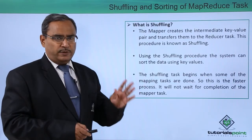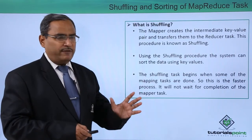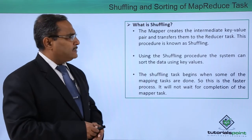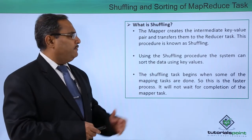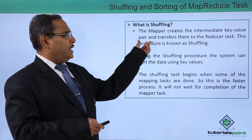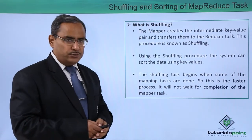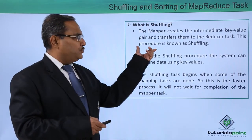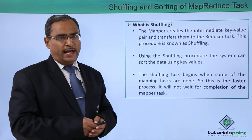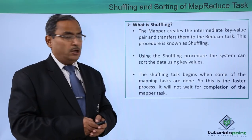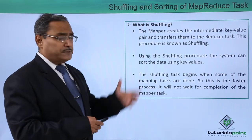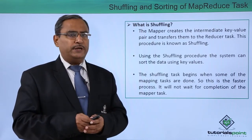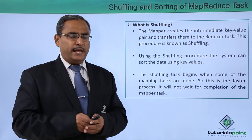What is shuffling? The mapper creates the intermediate key-value pairs and transfers them to the reducer task, and this procedure is known as shuffling. In the case of shuffling, some reordering of these key-value pairs will take place.